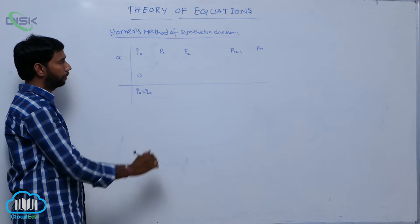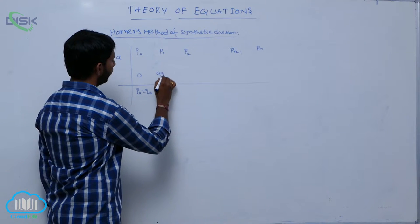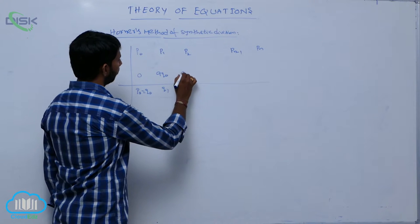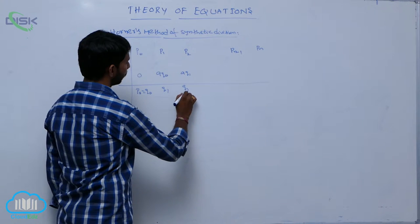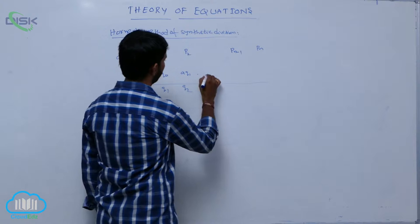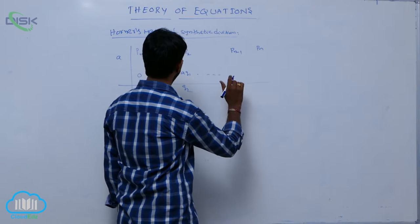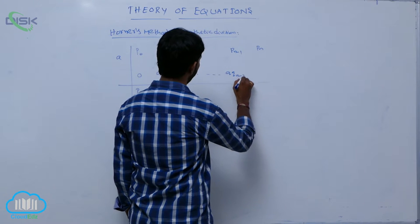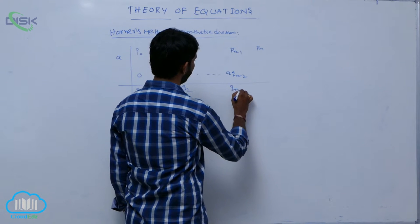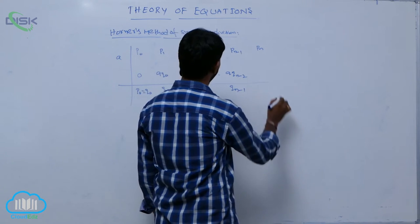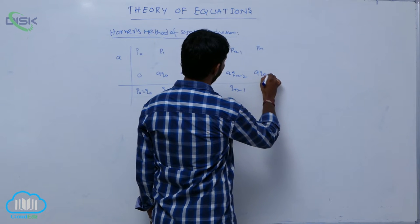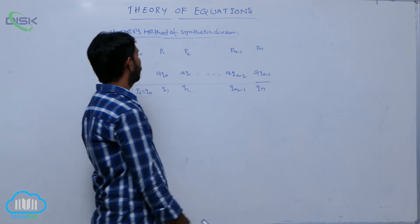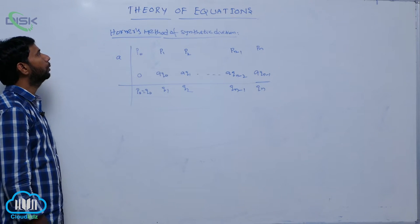p₀ is considered as q₀. q₀ is used to compute q₁. q₁ is considered as q₂, and so on. qₙ₋₂ is considered as qₙ₋₁. qₙ₋₁ is considered as qₙ.